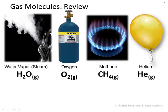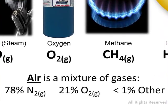The air you're breathing is not pure oxygen. In fact, oxygen isn't even the majority of molecules in your lungs. Air is a mixture of gases: about 78% of its volume is nitrogen molecules, N2. Only 21% is oxygen. The remaining less than 1% includes a wide range of gases that vary by location, weather, and air quality — things like water vapor, carbon dioxide, carbon monoxide, ozone, nitrogen dioxide, and more.